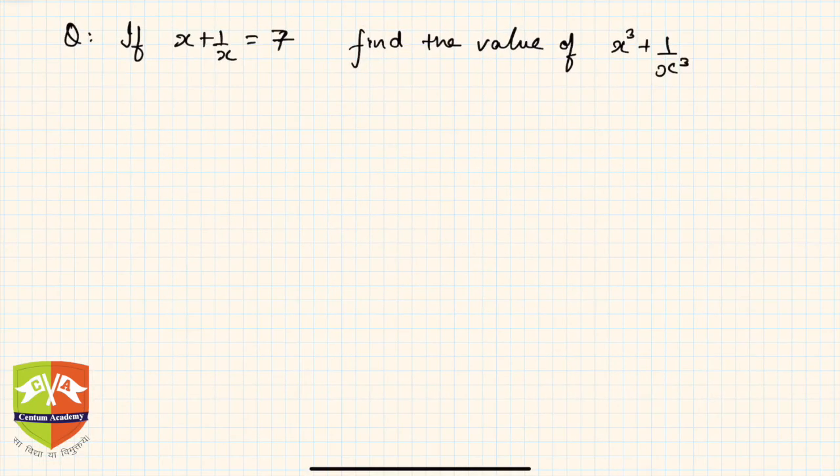Again, if you see, there is given that x plus 1 by x equals 7, so you have to find the value of x cube plus 1 by x cube. If you see, again it is hinting us to go for a cubing of the binomial. So let's do that.